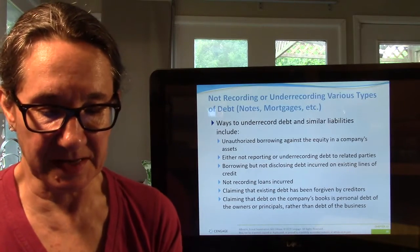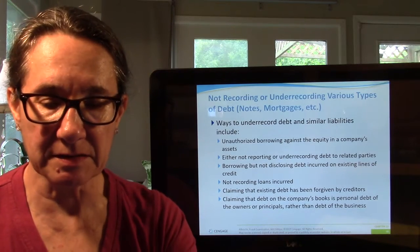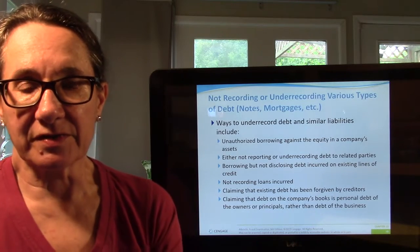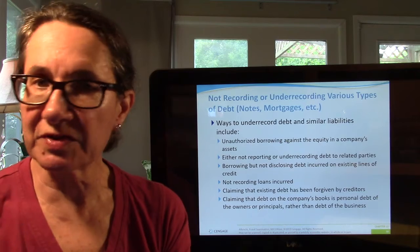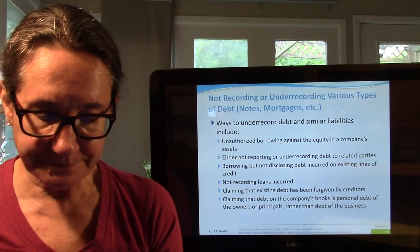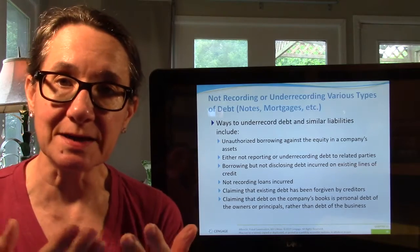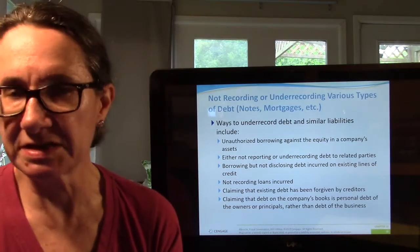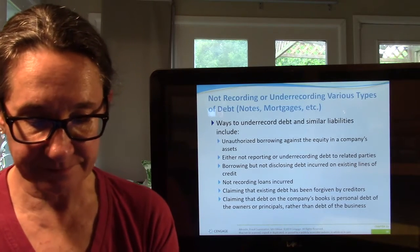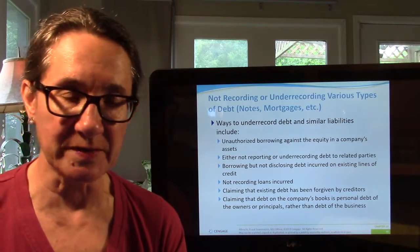The main thing if you're committing liability fraud is to understate those liabilities. If you understate liabilities, you're frequently understating an associated expense as well. For notes and mortgages — these are one-time deals — just leave them off, don't report them, don't record them, call it something else, say it's been forgiven and write it off, or say it doesn't belong to this company.